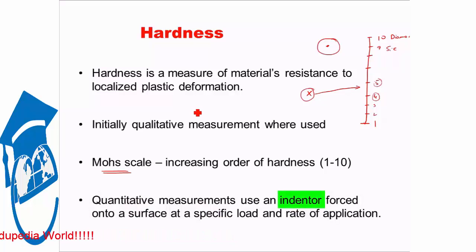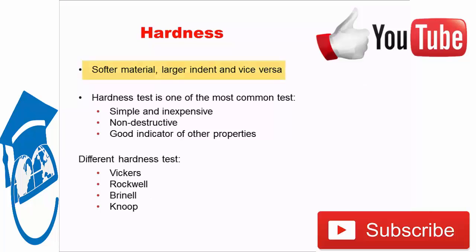Now if the material is soft, then the dimension of the indent that is created will be large because the indenter will be penetrated further deep, thereby larger indent will be created. If the material is hard, then smaller indent will be created. Thereby, by measuring the dimension of the indent created, we can give it a particular hardness value. The dimension of the indent created is converted into hardness values using specific formulas that has been derived experimentally. Softer material will have larger indent and vice versa.